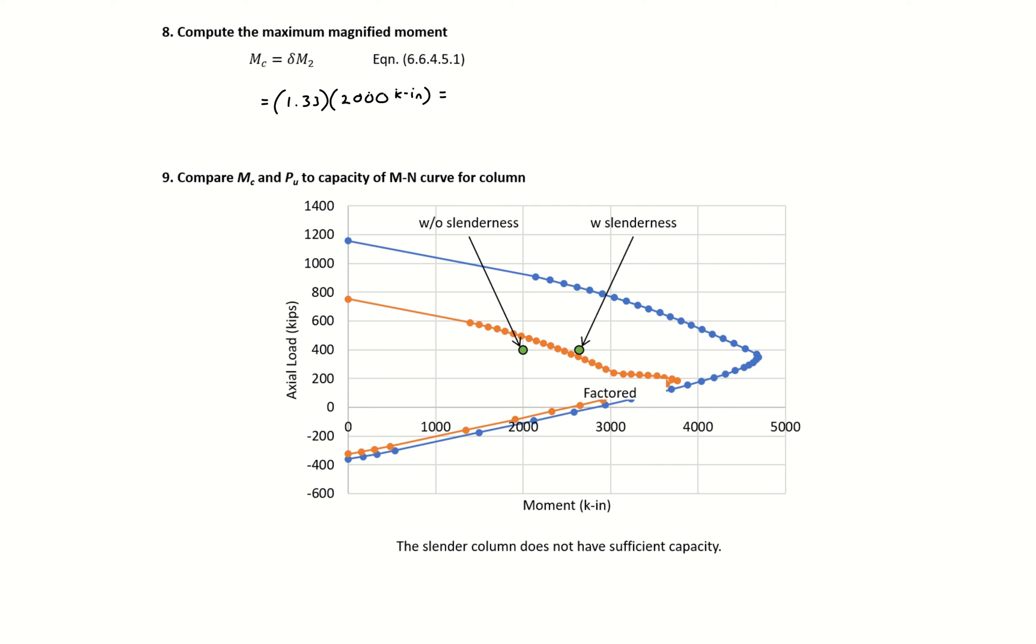For us, 1.33 times 2,000 is 2,660 kip-inches. This in combination with our axial load of 400 gives us our load combination. Then we can compare this load combination point with our short column capacity and see if we check. On our moment-axial force interaction diagram without slenderness, we have sufficient capacity, so our column is okay.